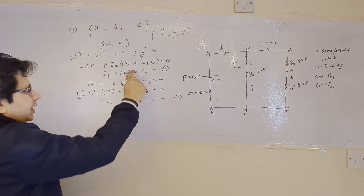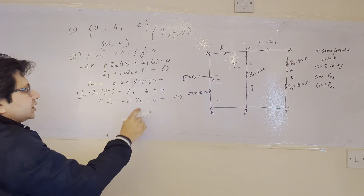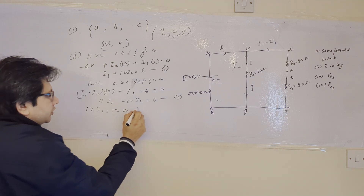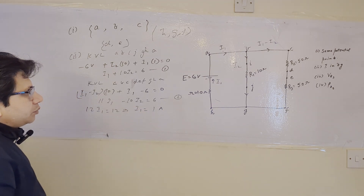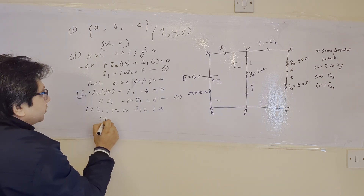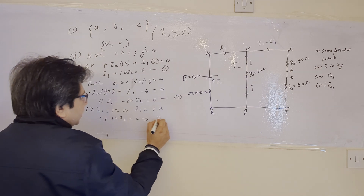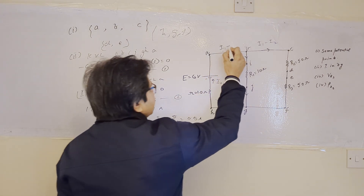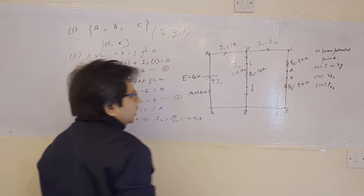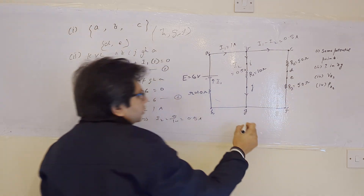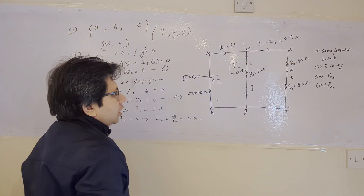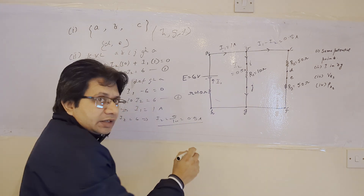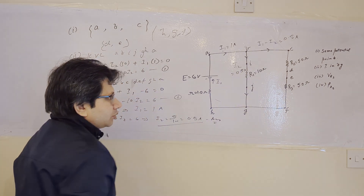Adding the two equations, the +10·I2 and −10·I2 terms cancel, giving 12·I1 = 12, so I1 = 1 ampere. Substituting into equation one: 1 + 10·I2 = 6, so I2 = 5/10 = 0.5 amperes. Therefore the current in branch BG is I2 = 0.5 amperes. This is the answer to Part B.